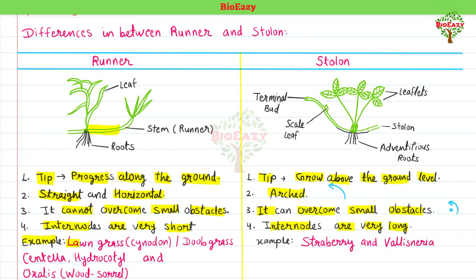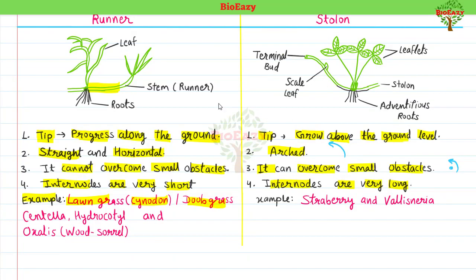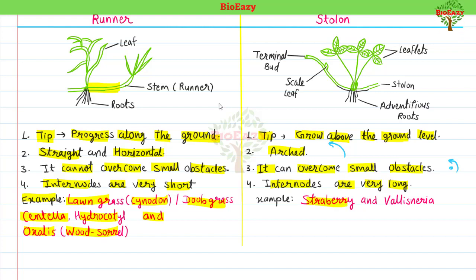Examples of runners include lawn grass, Cynodon (doob grass), Centella, Hydrocotyle, and Oxalis (also called wood sorrel). Examples of stolons include strawberry and Vallisneria. Thank you very much.